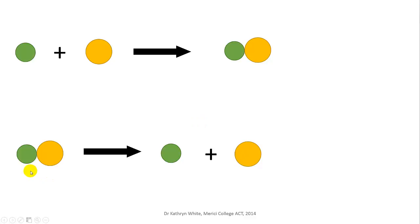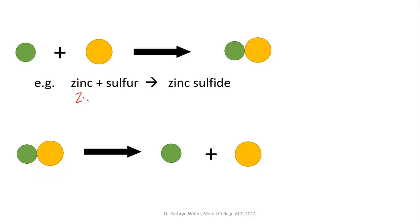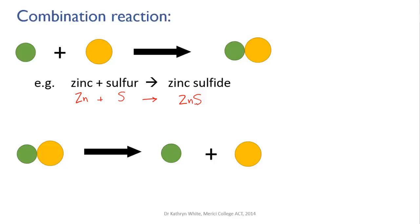An example of putting stuff together would be the reaction between zinc and sulfur. You mix zinc powder and sulfur powder together, heat it to get the reaction going, and it transforms into the ionic compound zinc sulfide. This kind of reaction, where you combine two reactants into one product, is called a combination reaction.